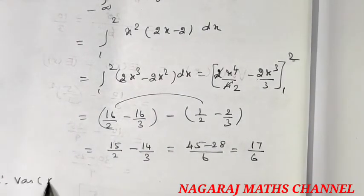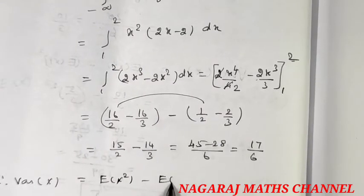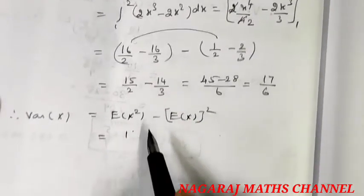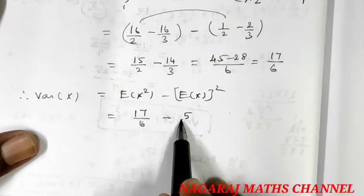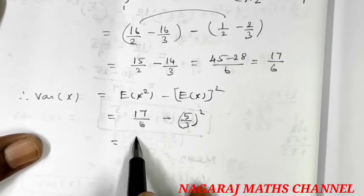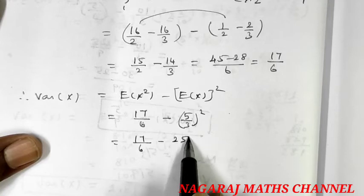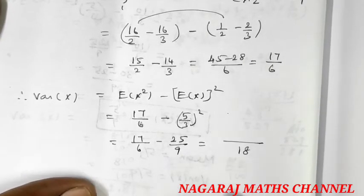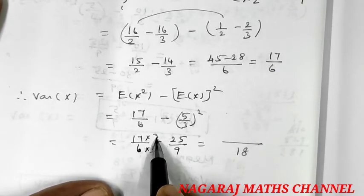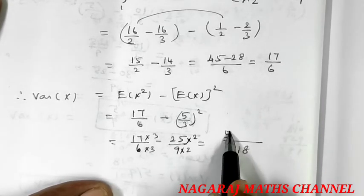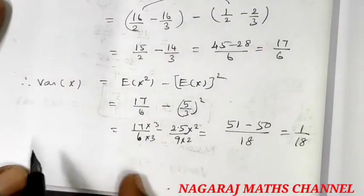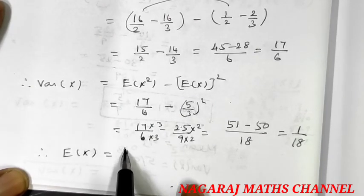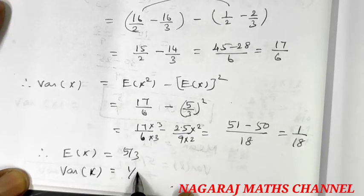Therefore, the variance of x equals E(x squared) minus [E(x)] squared. That is 17 divided by 6 minus (5 divided by 3) squared, which equals 17 divided by 6 minus 25 divided by 9. Computing: 51 divided by 18 minus 50 divided by 18, which gives 1 divided by 18. Therefore, mean E(x) equals 5 divided by 3, and variance of x equals 1 divided by 18. This is the solution.